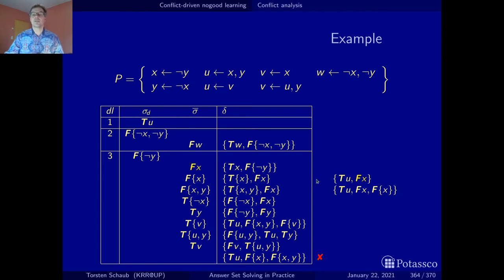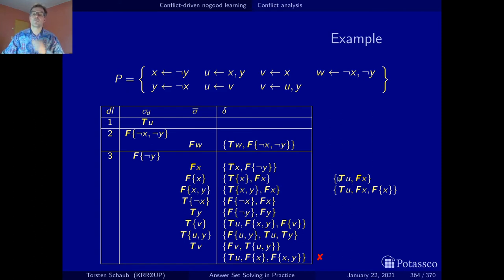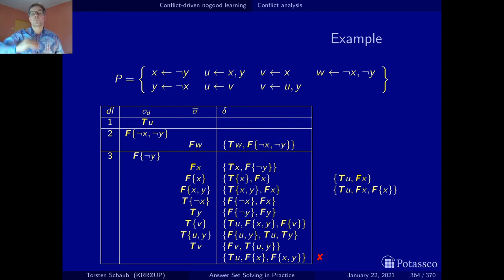This no-good is interesting because it is unit resulting from the last but one level at level 2 — t of u is at level 1. So if we clear level 3 and resume unit propagation after adding this to the dynamic no-goods, we get a propagation at level 2. But we can go up to the maximum level of the remaining literals in the conflict no-good. In our tiny conflict case, the other literal is t of u at maximum level 1. Taking this no-good to level 1 would also yield a unit resulting literal because t of u is there.